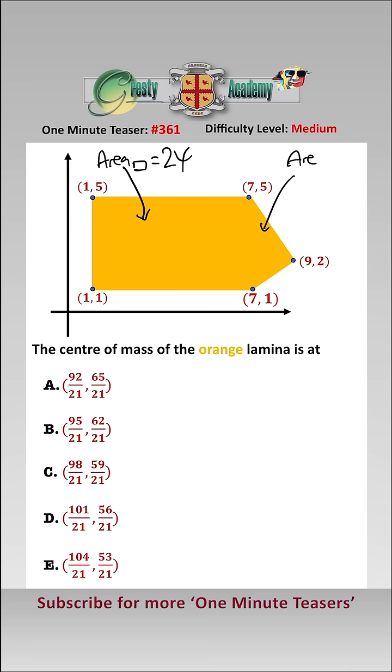We have that the area of the triangle is equal to base times perpendicular height over 2, which is 4 times 2 over 2, which is 4. Therefore, the total area of the lamina is 28.